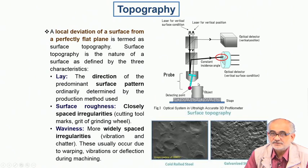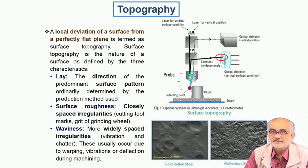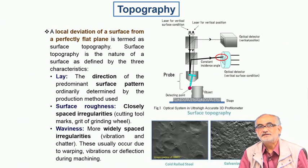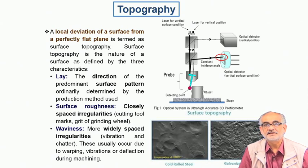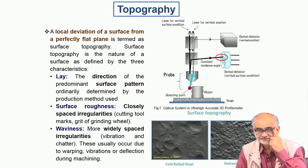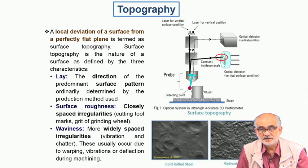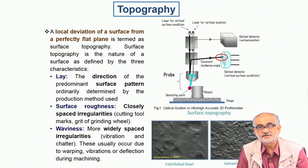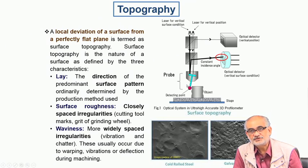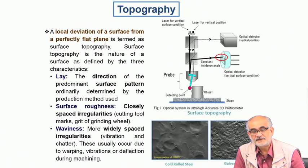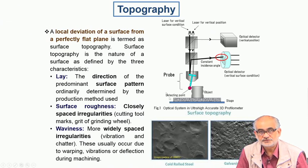In a non-contact profilometer we generally follow the reflection profile, and if the surface has certain levels of waviness or roughness then it will definitely show different kinds of contour.